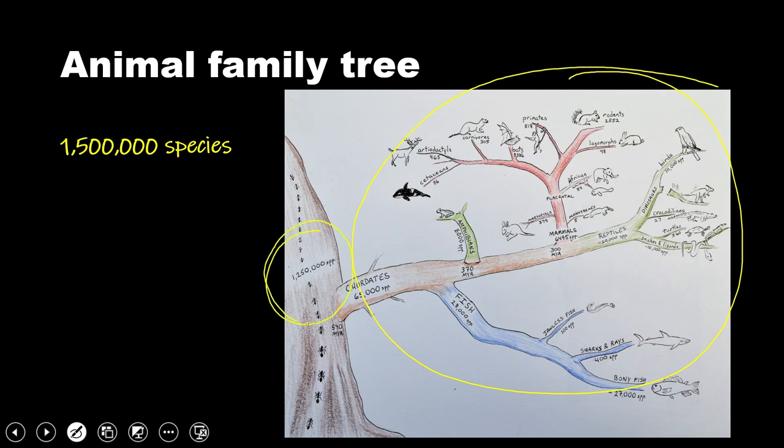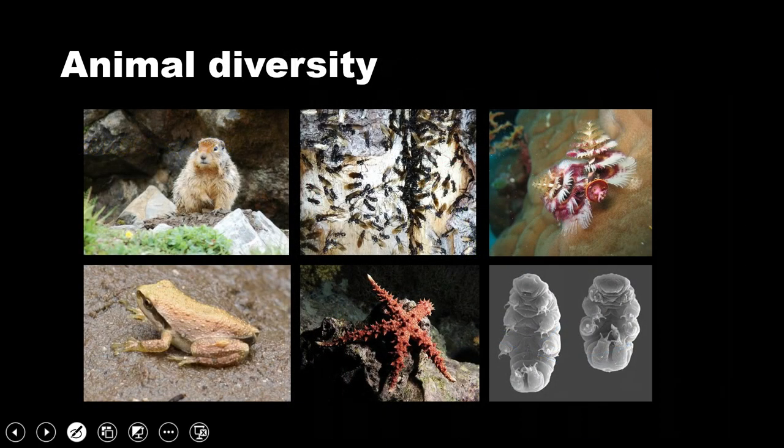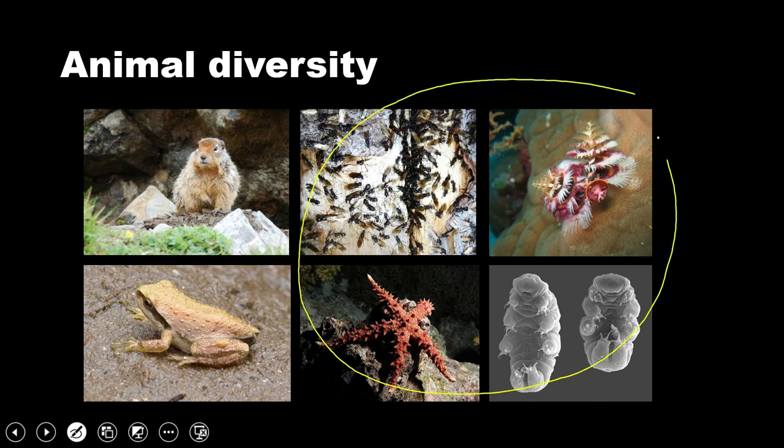Most of them, things like these ants and sea stars and whatnot that don't have a backbone. This gets a little more representative, but still misses the mark. Most animals are things like this, not things with four legs and a backbone.